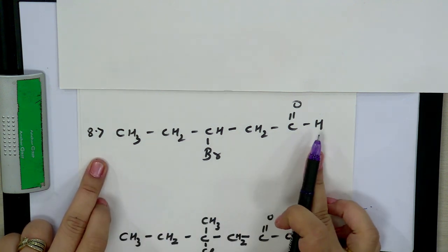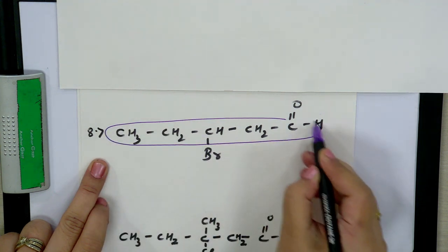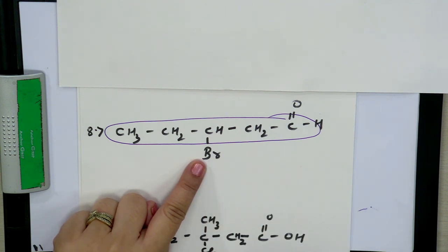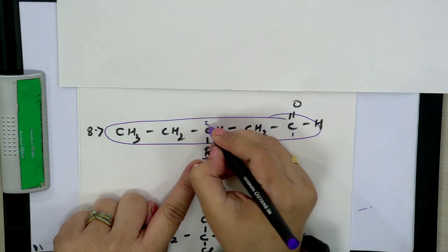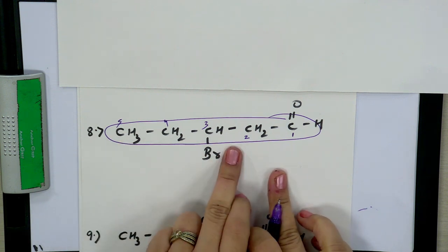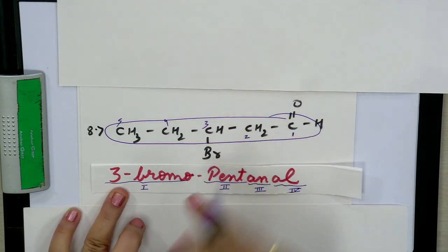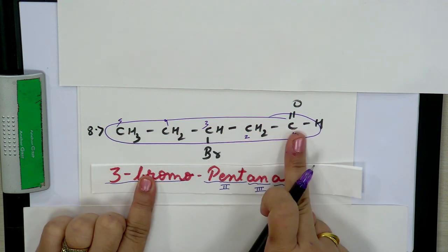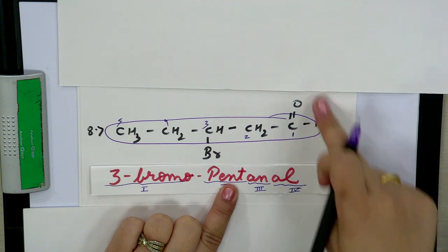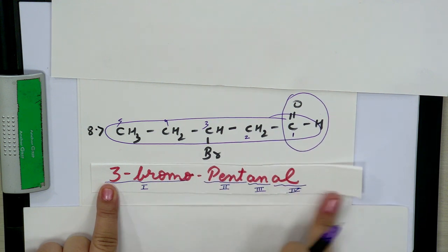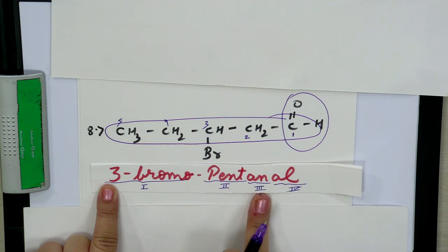If a substituent like Br is also present along with an aldehyde group, the functional group still gets the highest priority for numbering. With five carbons in the longest chain, the functional group at position 1, and Br at position 3, write: prefix '3-bromo', root word 'pent', primary suffix 'an', secondary suffix 'al' — giving 3-bromopentanal. This name covers all four parts of IUPAC nomenclature.